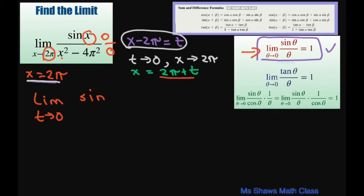Well, our x is 2π plus t. And then in the denominator, we're going to have 2π plus t squared minus 4π².